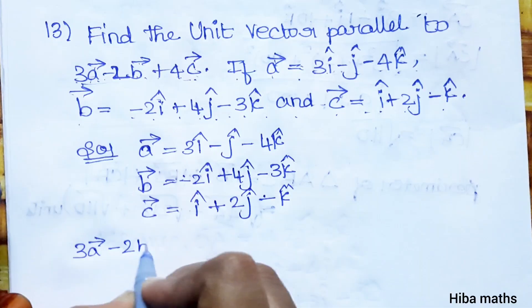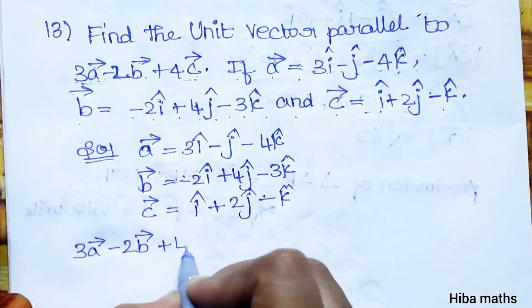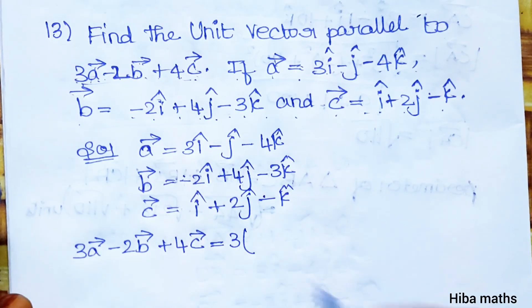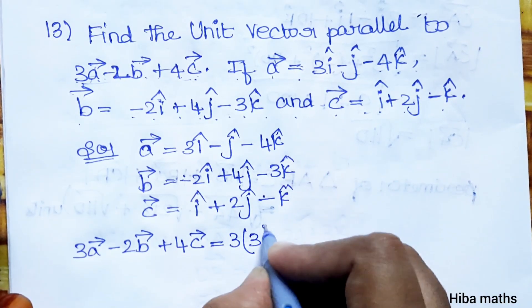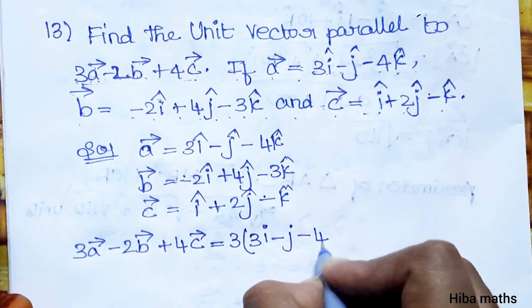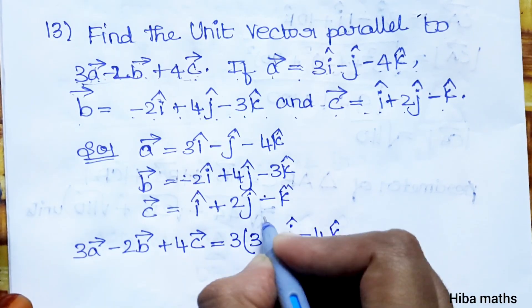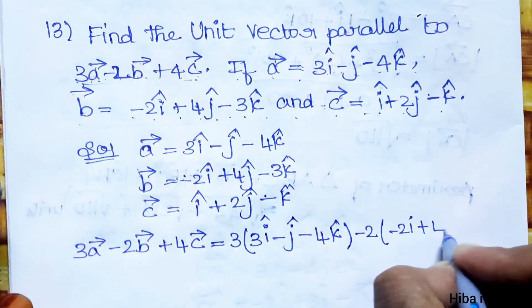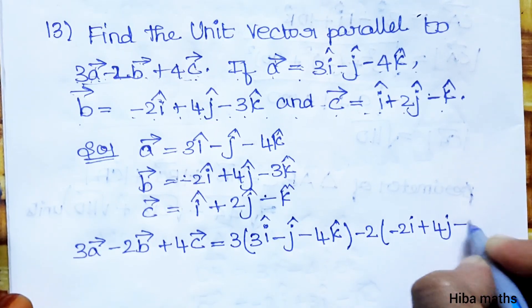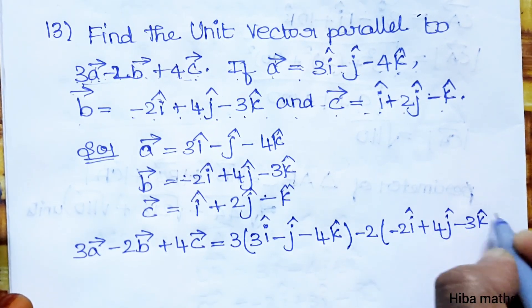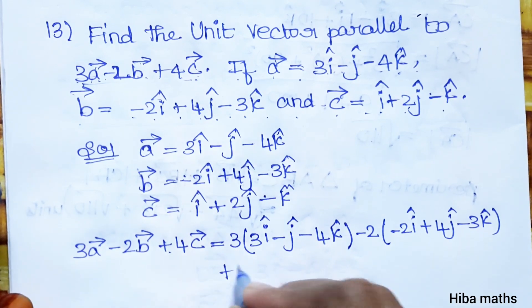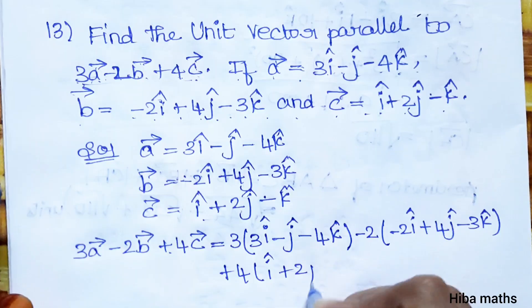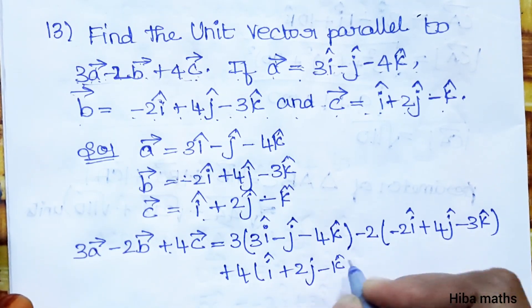3A vector minus 2B vector plus 4C vector equals 3 into A vector, which is 3i minus j minus 4k, minus 2 into B vector, which is minus 2i plus 4j minus 3k, plus 4 into C vector, which is i plus 2j minus k.